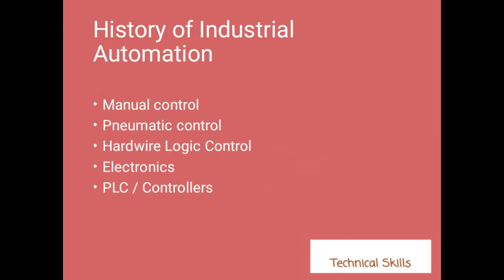Now let's discuss the history of industrial automation — how far our industry has progressed. The first stage is manual control. Earlier we used to do all work manually — cutting, mixing, loading — everything done manually. All the advantages we discussed earlier were actually disadvantages in manual control: no high productivity, no great quality, no safe working conditions, no time saving, and lots of human effort required.